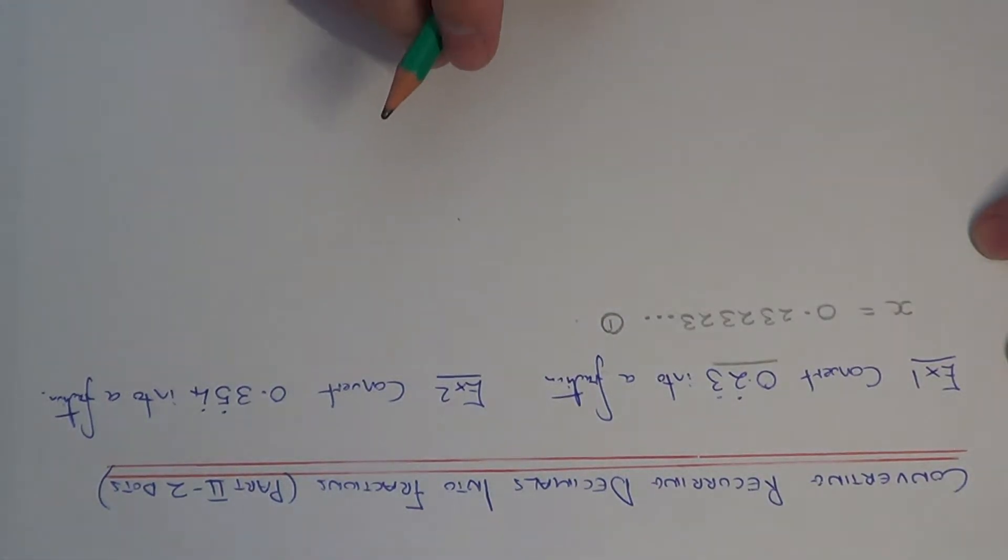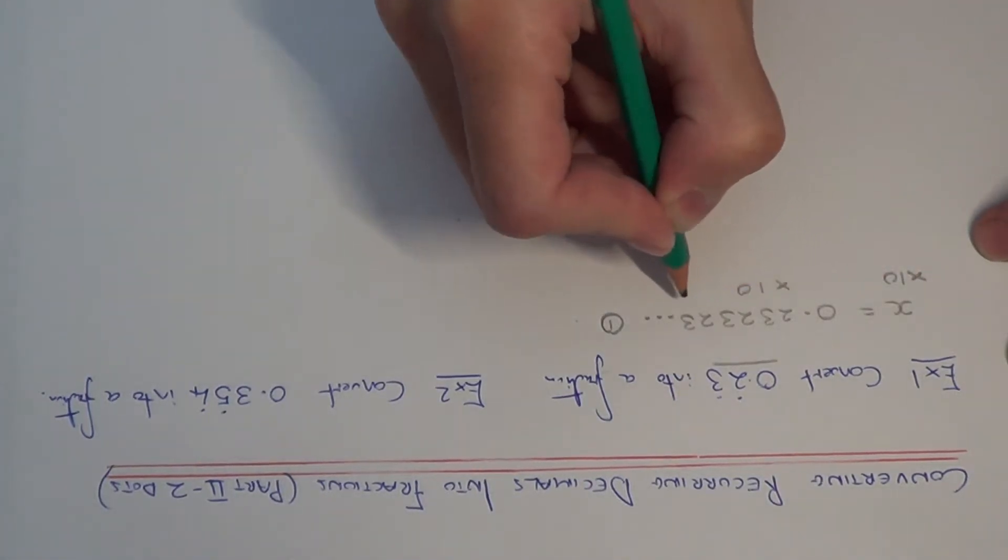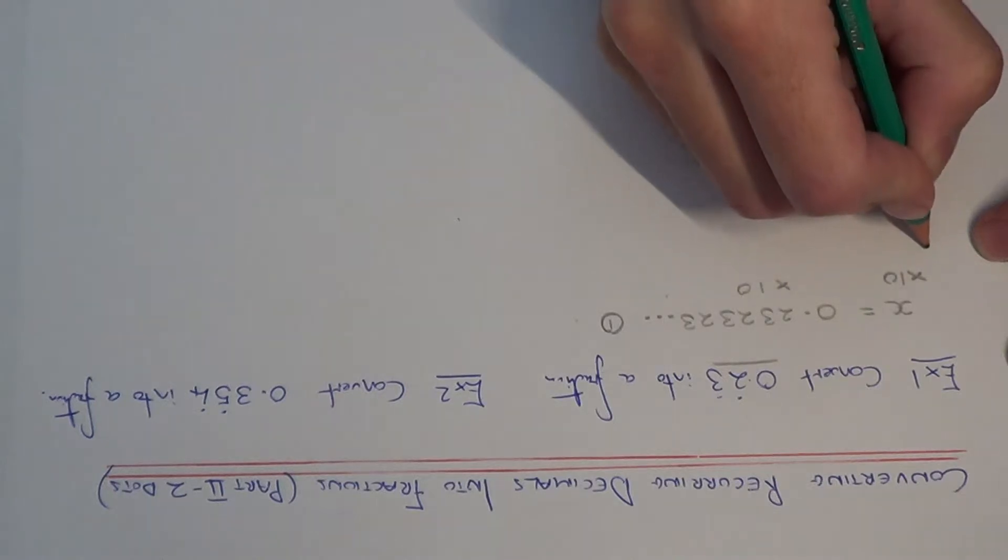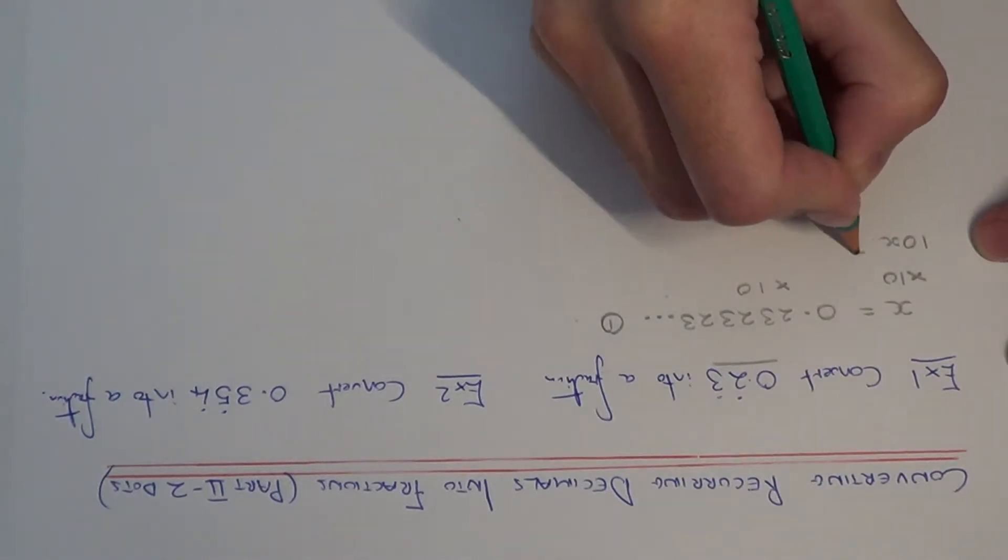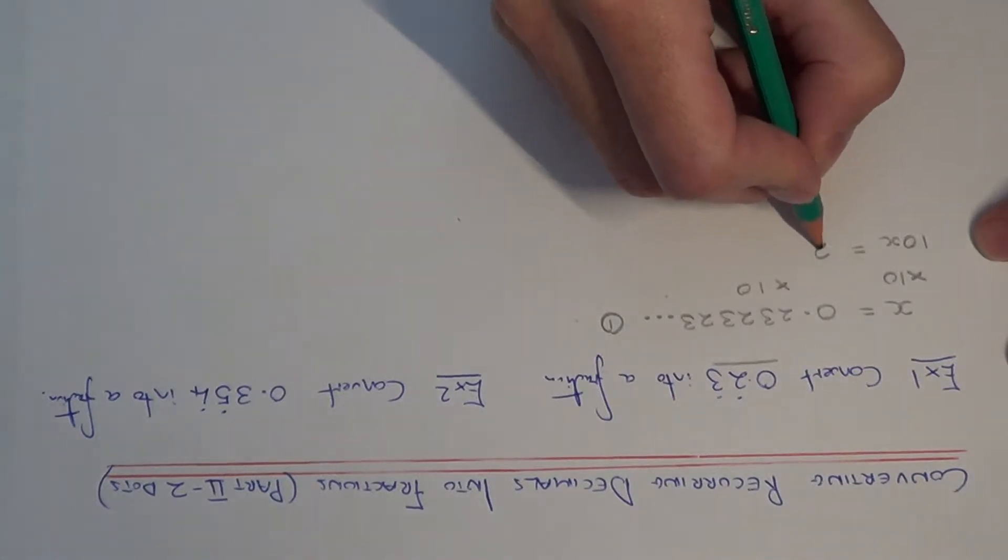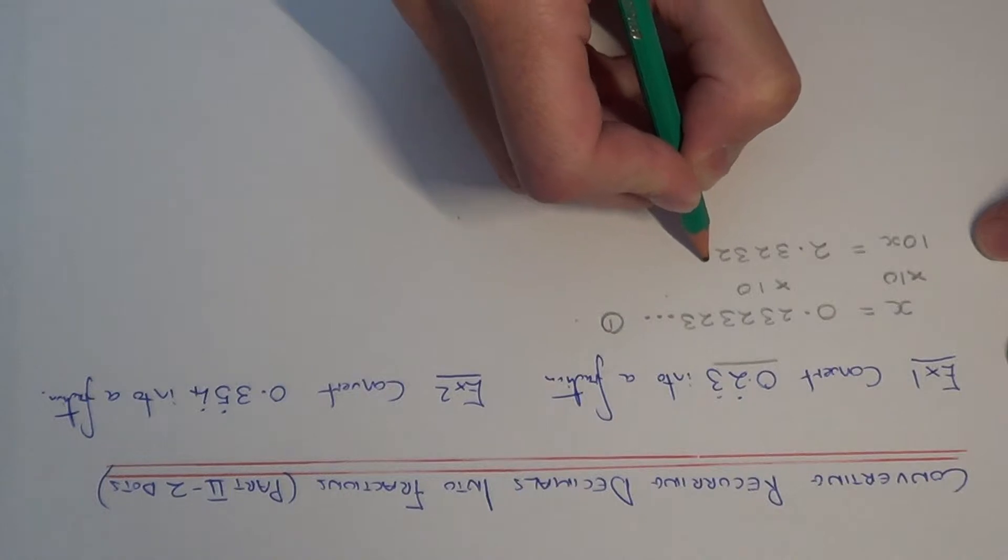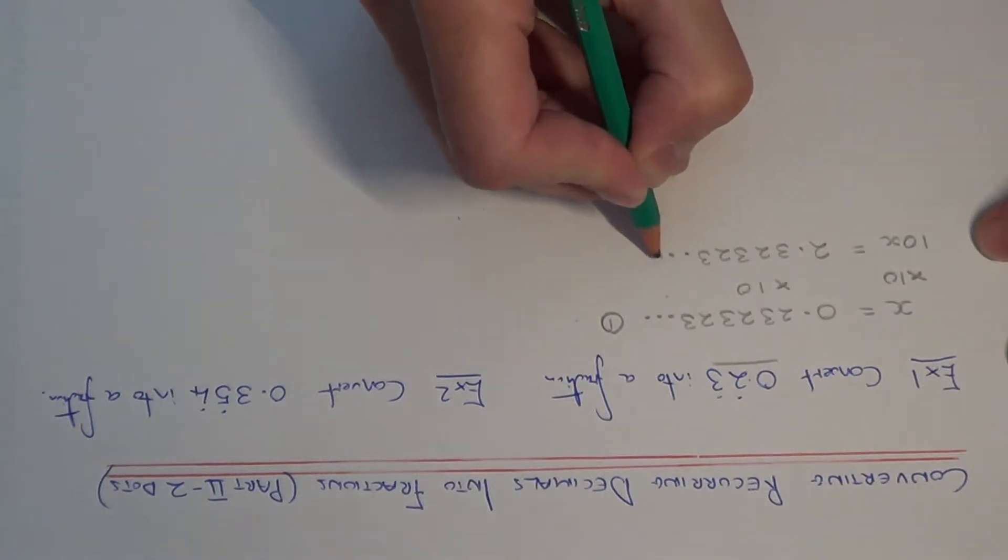So the next thing I want to do is multiply both sides of this equation by 10. So x times 10 is 10x, and if I multiply this by 10, all the numbers move over the decimal point one place, you get 2.32323 etc.